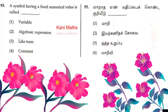Question number 95. A symbol having a fixed numerical value is called a constant. That is called a constant. So we know what the answer is — a constant is such a singular term.